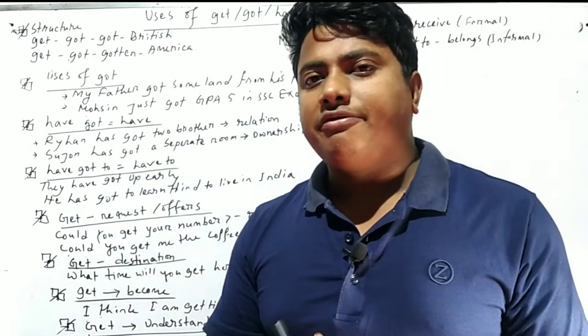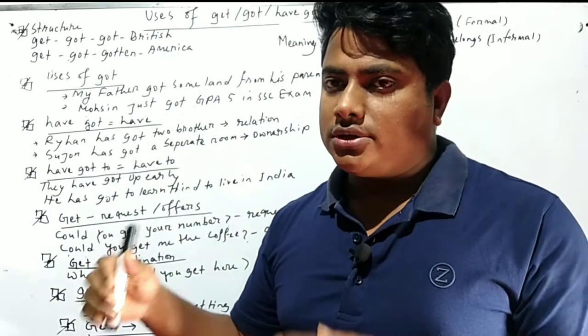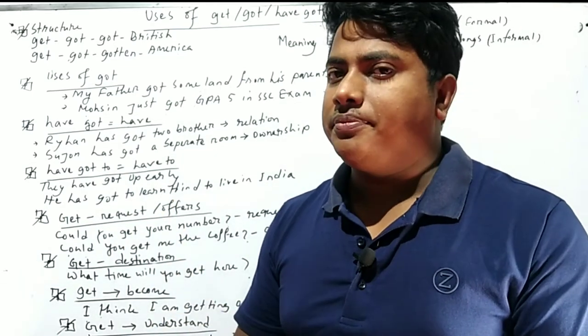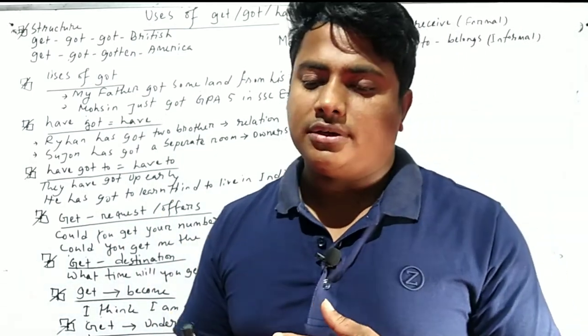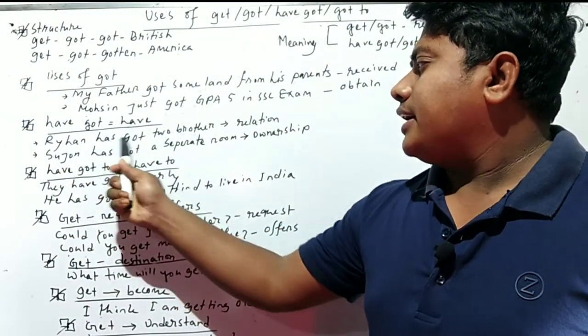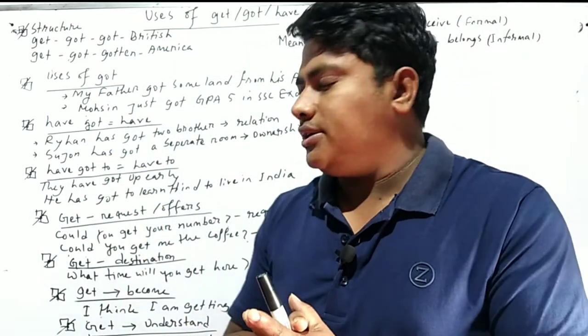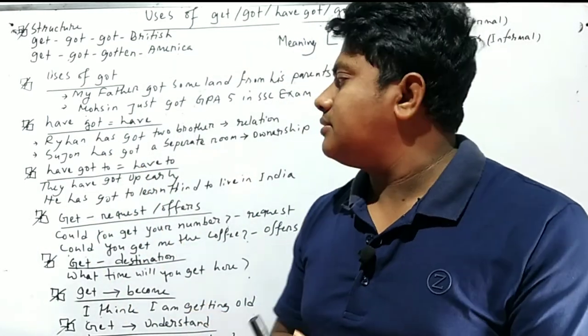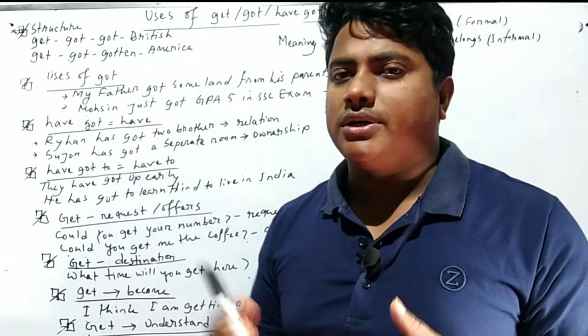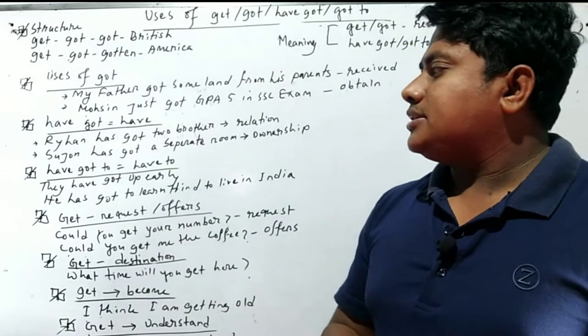Here's an example: Ryan has got two brothers. Here, got means the relation. Ryan belongs to two brothers, or Ryan has two brothers. But in another sense, another example...